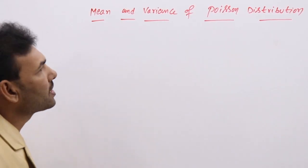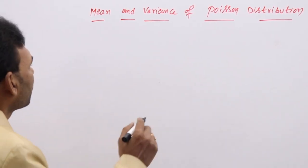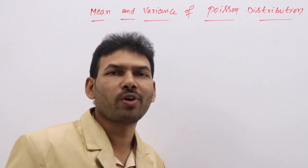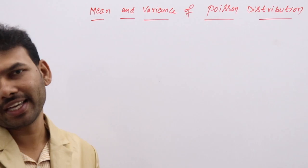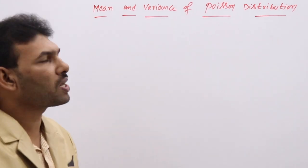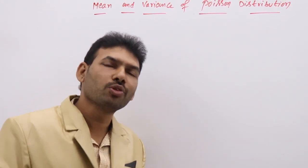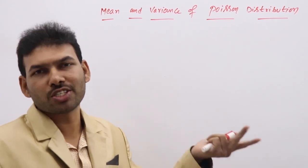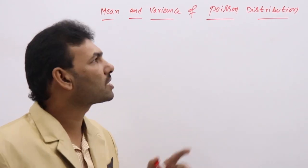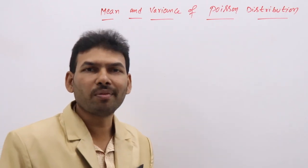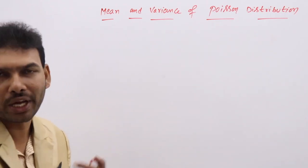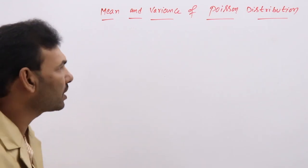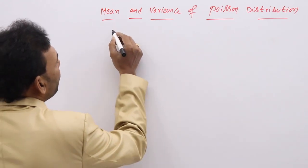Mean and variance of Poisson distribution. For Poisson distribution, we are going to calculate its mean and variance. While introducing Poisson distribution, we assumed that the mean of binomial distribution mu = np is taken as lambda. So we know the mean of binomial is lambda, and we are going to prove how the mean of Poisson distribution is lambda.